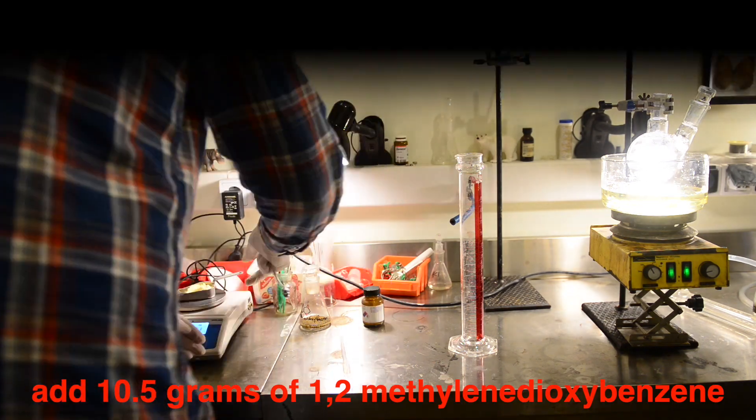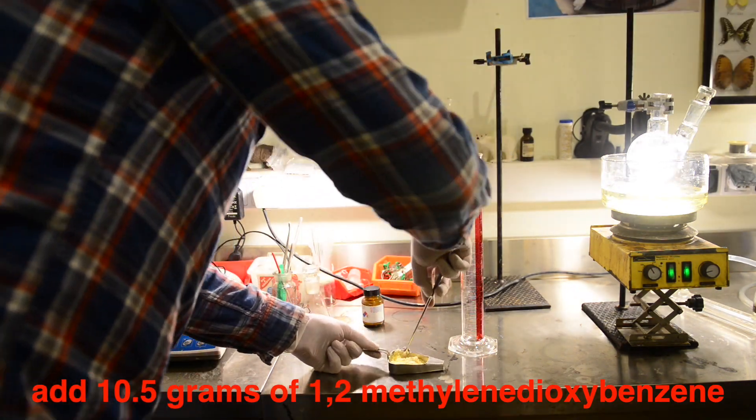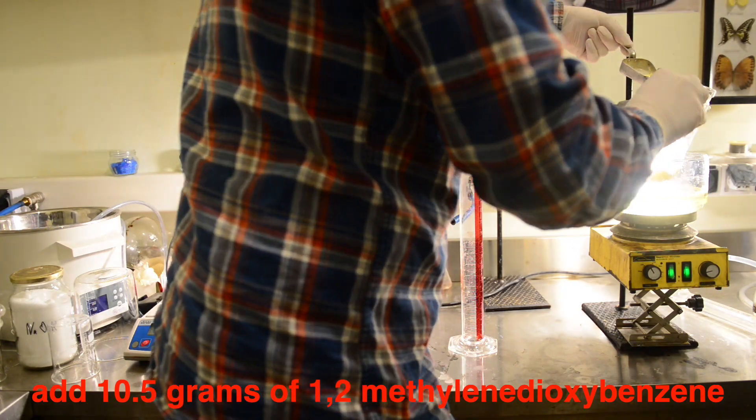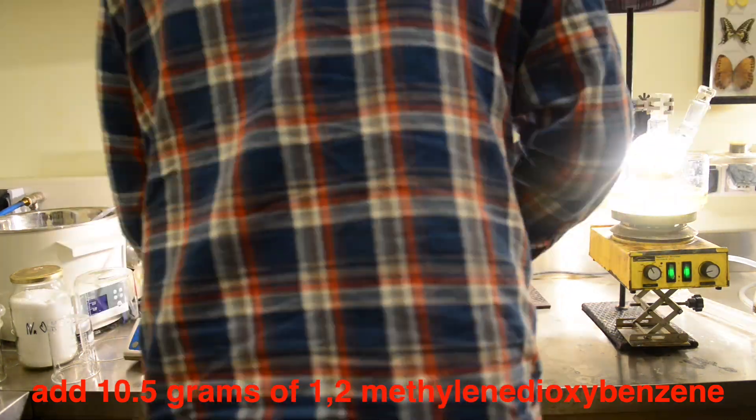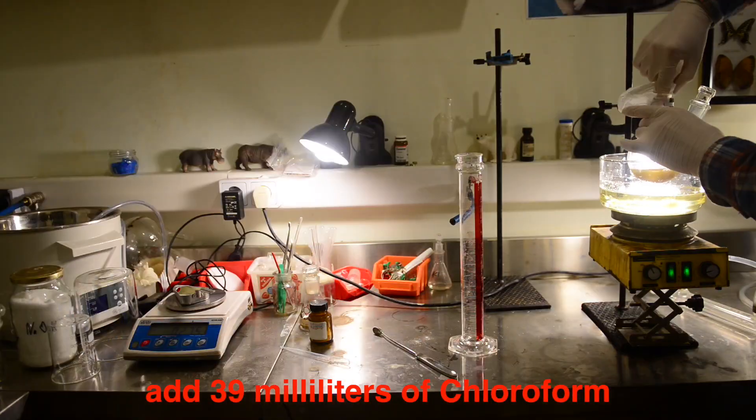Let's get started. This time we are changing the addition order. We place 10.5 grams of 1,2-methylenedioxybenzene at first, followed by 39 milliliters of chloroform.